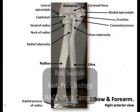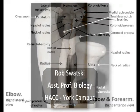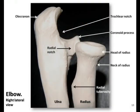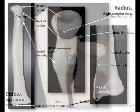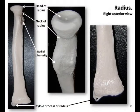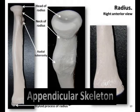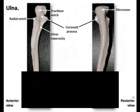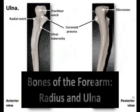Hello, this is Rob Swatsky from the York campus of Harrisburg Area Community College in York, Pennsylvania. In this podcast, I'm continuing my review of the appendicular skeleton with the bones of the forearm, the radius and the ulna.